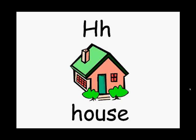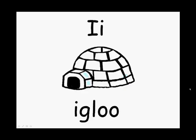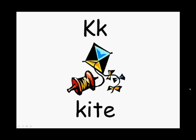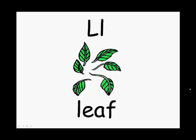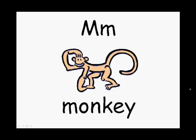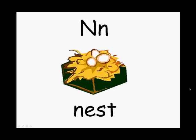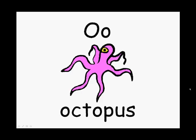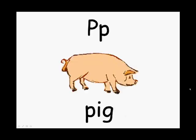F, Fish. G, Goat. H, House. I, Igloo. J, Jam. K, Kite. L, Leaf. M, Monkey. N, Nest. O, Octopus.